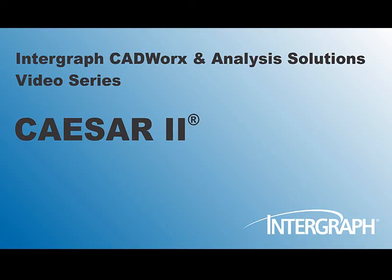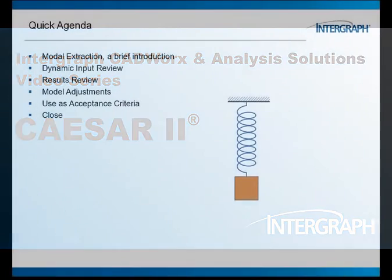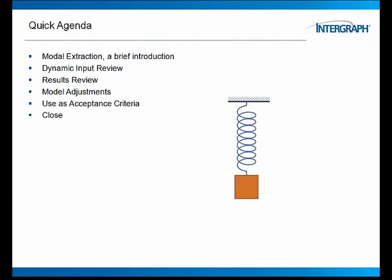Welcome to another in our series of Intergraph Caesar and Analysis Solutions videos featuring Caesar II. Our quick agenda, now don't start looking at the thing bouncing up and down. We're going to take a quick look at modal extraction and then review the input in Caesar II. It's going to be more of a navigation course. We'll take a look at the results of course, and then we'll look at how we will use this data, or how we can improve the data that we're creating out of Caesar II and use it as an acceptance criteria.